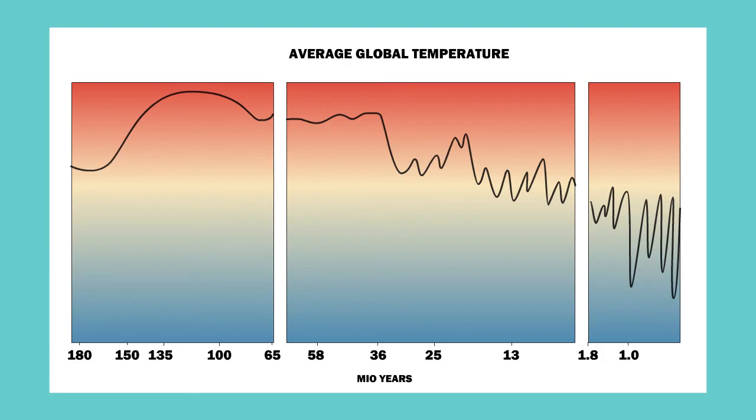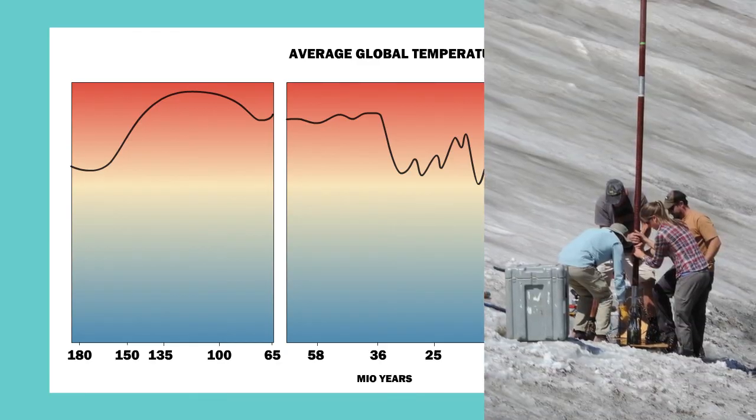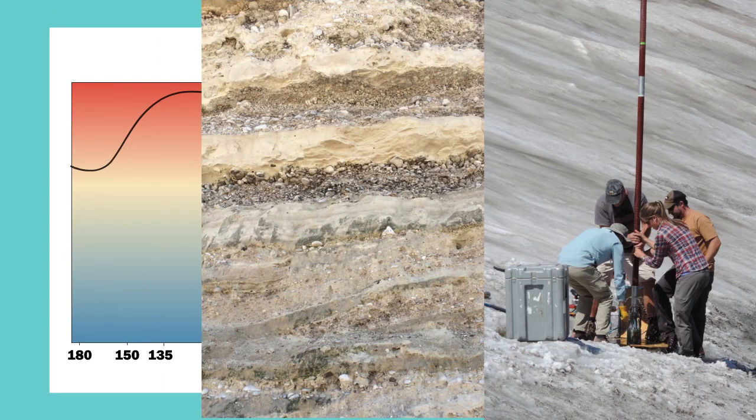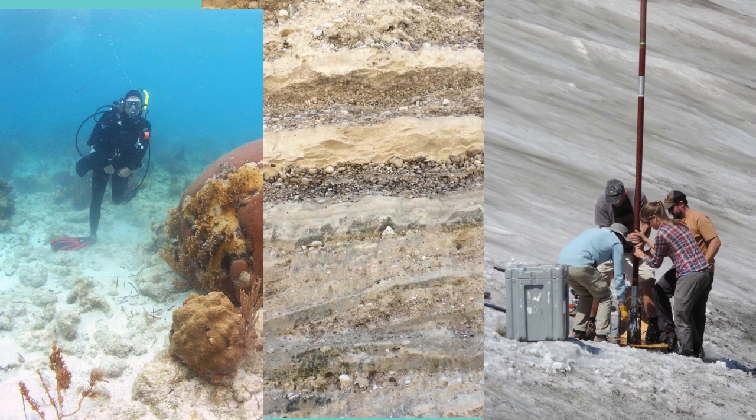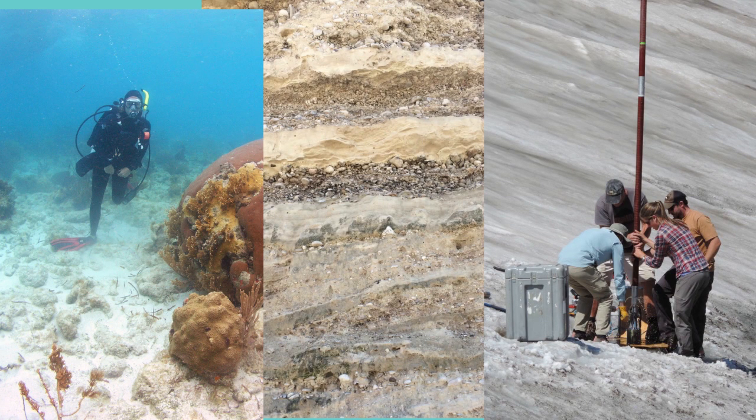In addition to the two I have presented here, there are many other proxies. We can, for example, also directly measure the isotopic composition in air bubbles preserved in ice. We can analyze the products of weathering in alluvial deposits, or we can use coral rings in a similar way that we use tree rings, and so on.